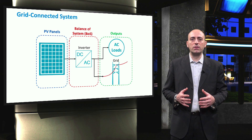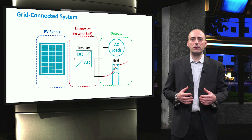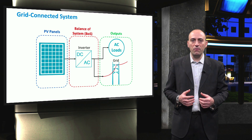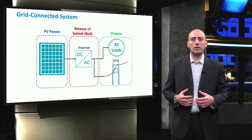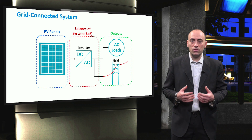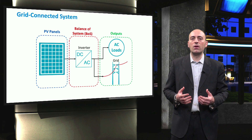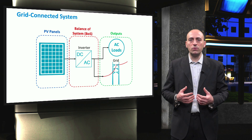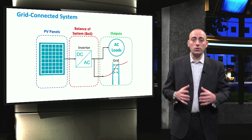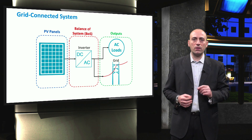In grid-connected systems, the inverter is connected directly to the PV array and converts the DC electricity coming from the PV array into AC electricity. Such an inverter usually contains an MPPT system. As such an inverter is connected to the electric grid, it must also be synchronized with the grid, meaning that the phase angle of the AC signal coming from the inverter must be equal to that of the grid. In order to increase power quality of the grid, the injected signal should have a minimal harmonic content.